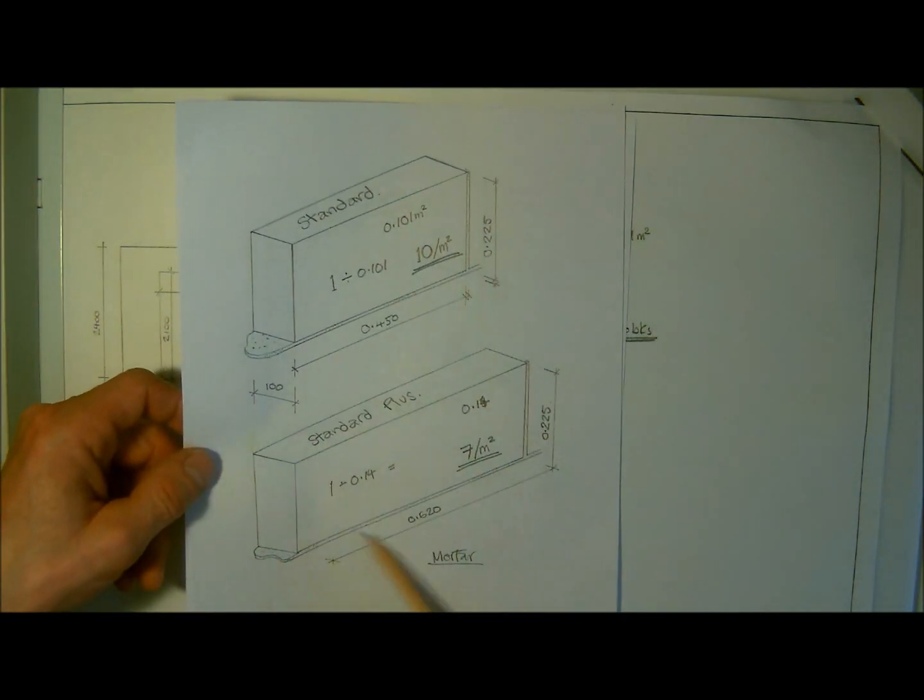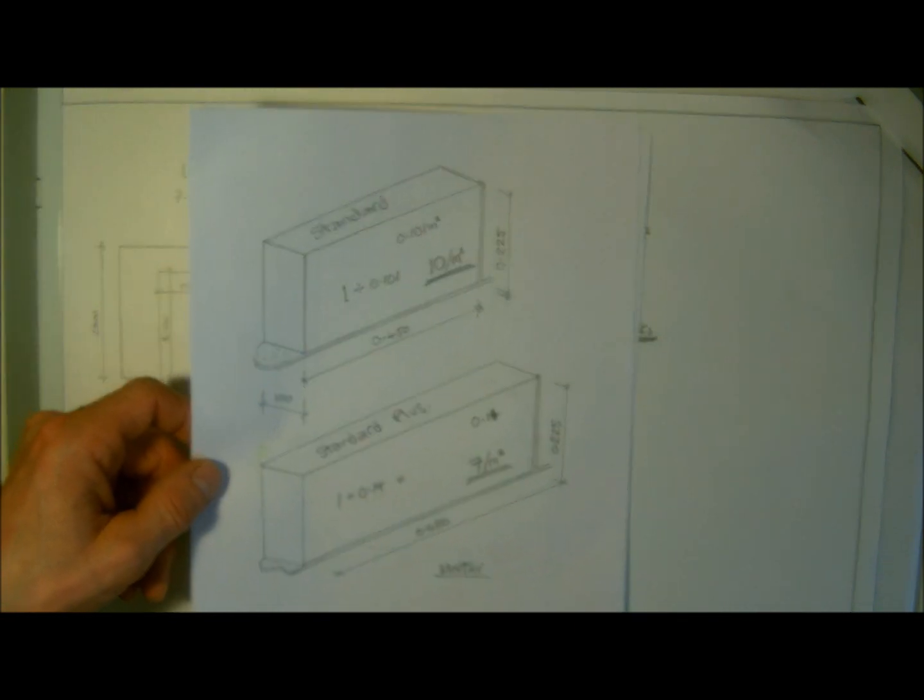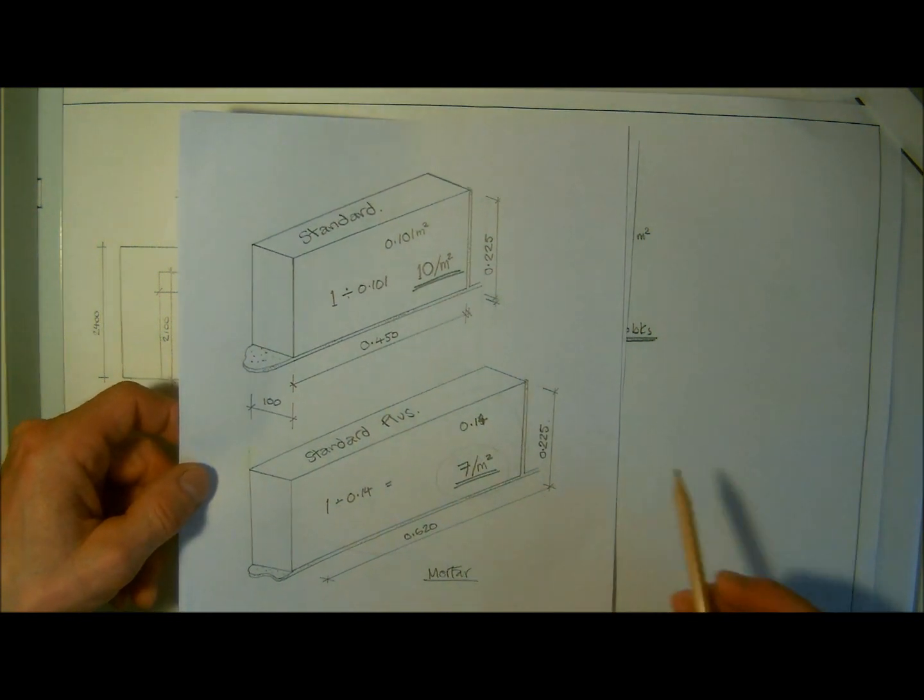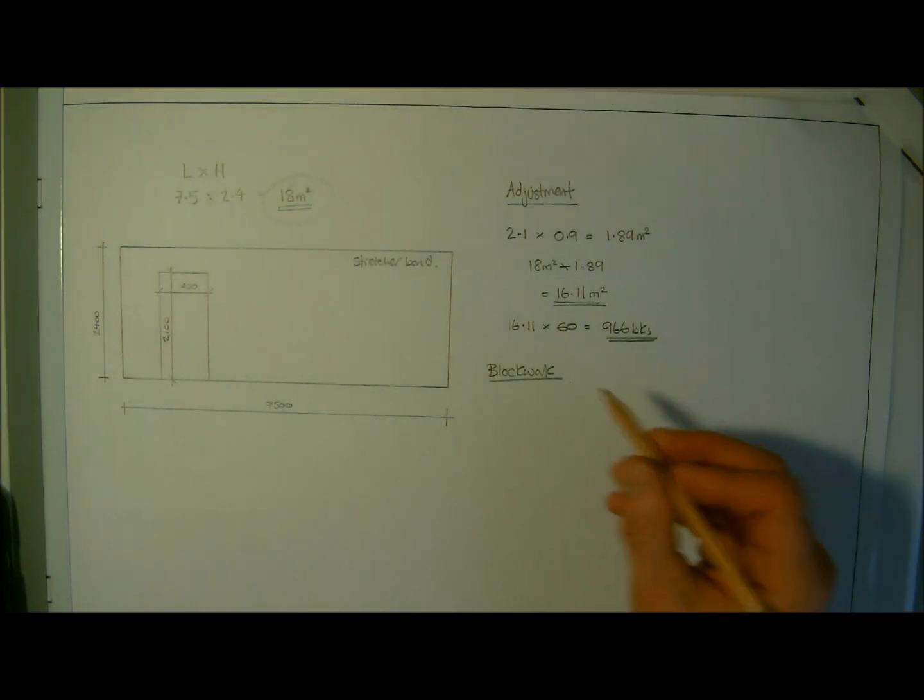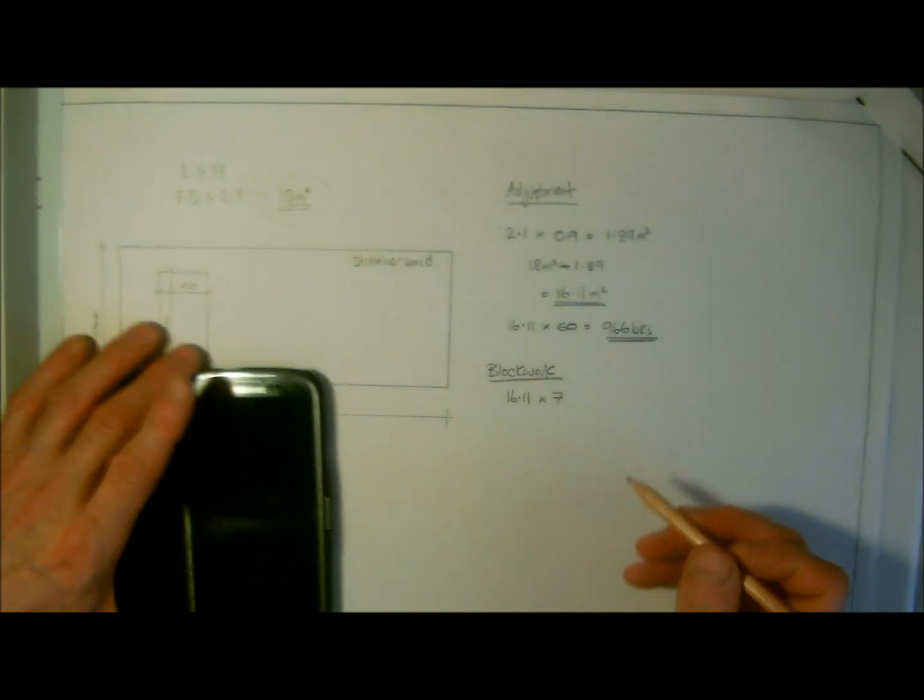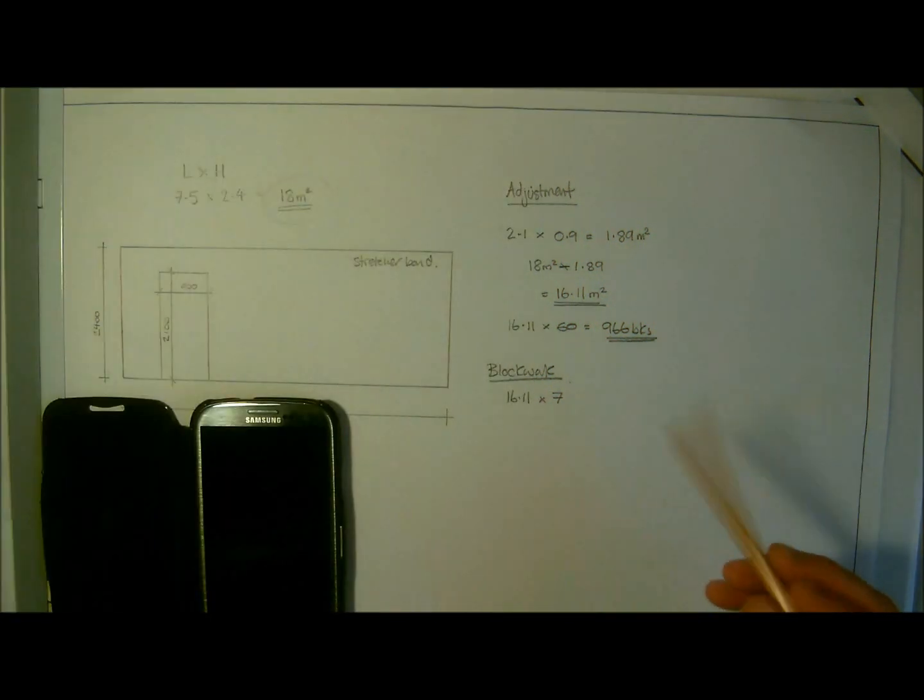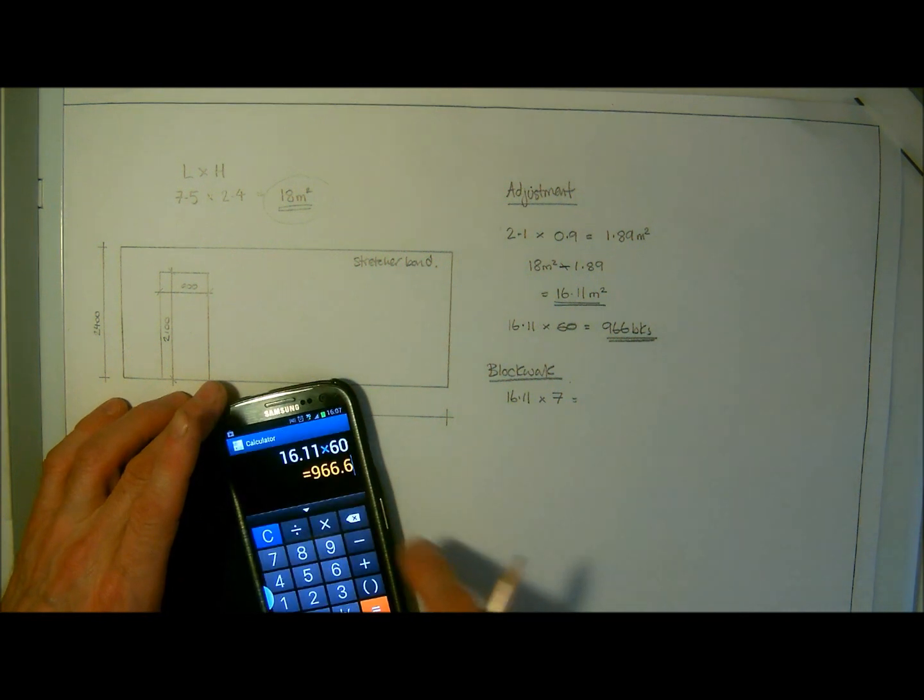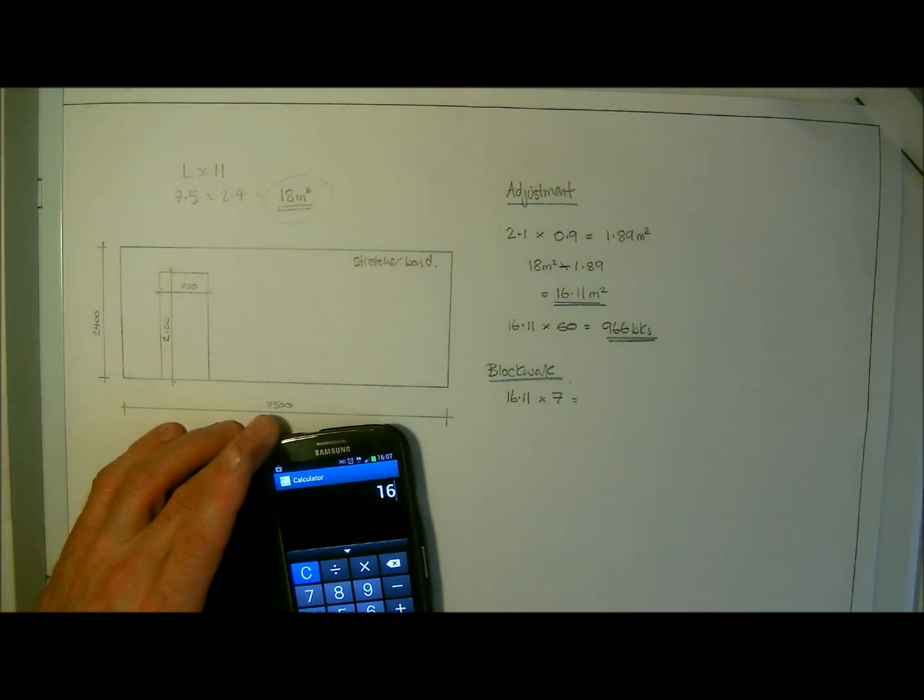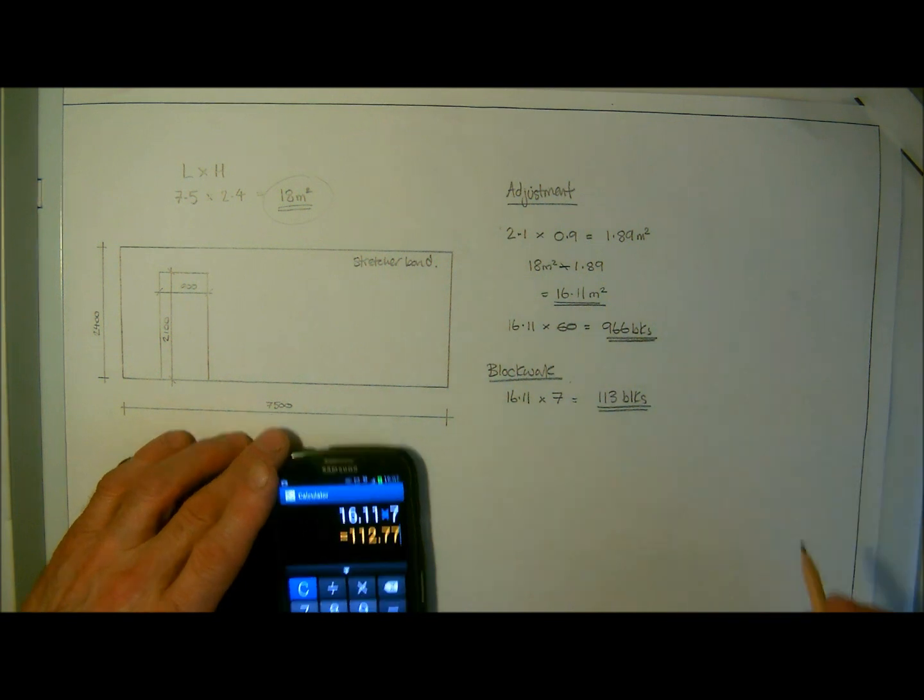I'm going to choose that we use a standard plus, simply because they're a bigger block and they tend to go down a lot quicker than the standard one. We're now looking at seven blocks per square meter. Back to our sixteen point one one times seven because of that block. Just a reminder, that's what we're looking at there. Sixteen point one one multiplied by seven gives us one hundred and thirteen blocks.